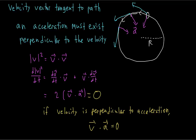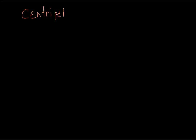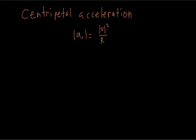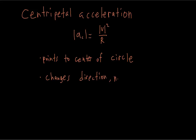This acceleration is called the centripetal acceleration. When an object is moving in a circle at a constant speed, its acceleration is equal to its speed squared divided by the radius of the circle. The centripetal acceleration always points towards the center of the circle, and it changes the direction, not the speed, of the velocity.